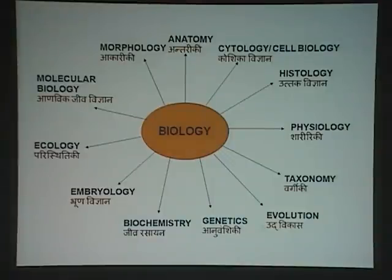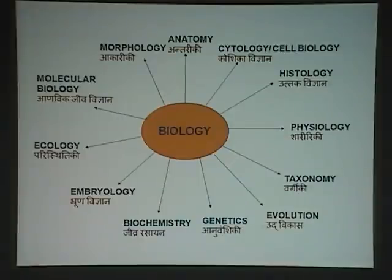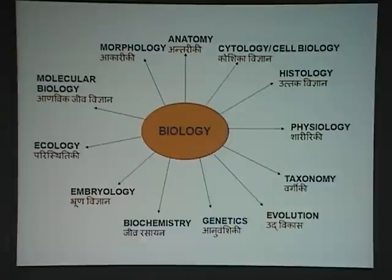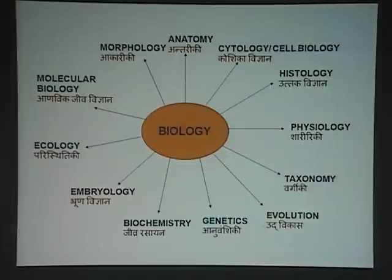You might have heard of Carolus Linnaeus. He gave binomial nomenclature. In which book was it published? Systema Naturae. He wrote two books: Systema Naturae and Genera Plantarum. It was published in 1758. In Systema Naturae he described binomial nomenclature.